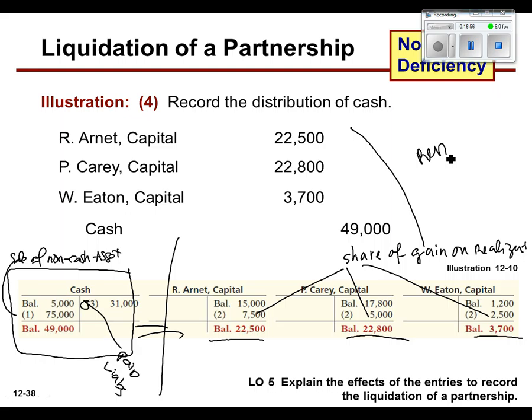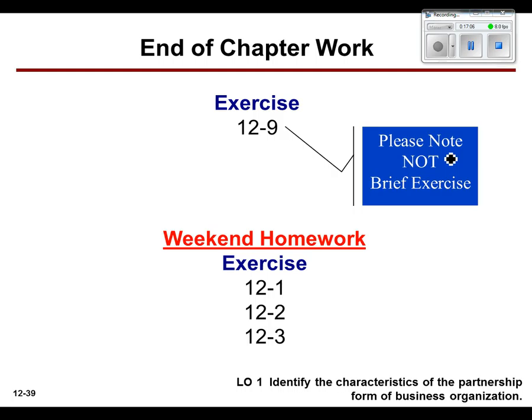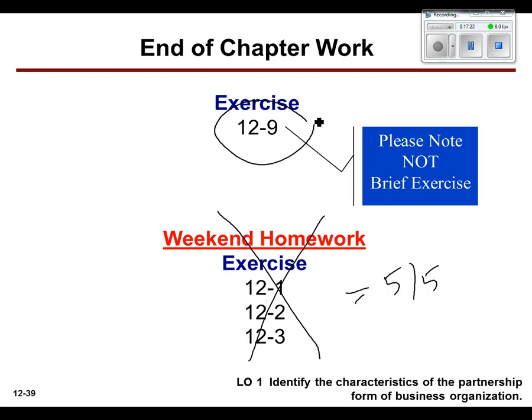That's it — four things that you journalized. We're now going to do Exercise 12-9 and we've got the perfect amount of time. The only thing we don't have is the T-accounts, so let's do those as we go.